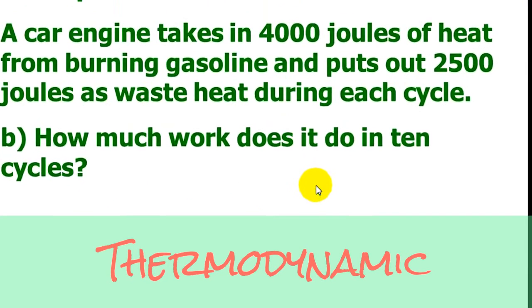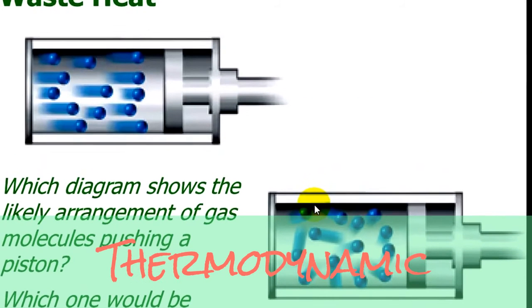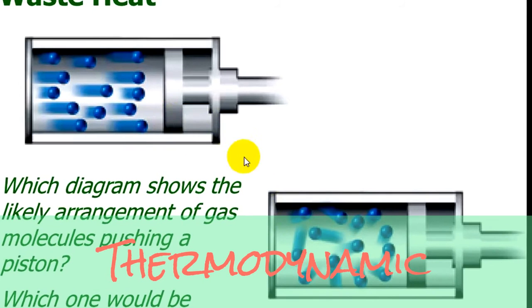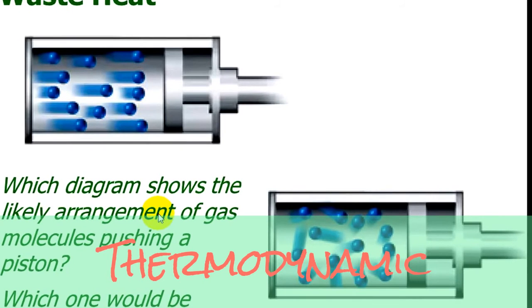Alright, so the next topic in this is waste heat. We're never going to be able to get all that energy from the incoming heat into work. You always have some waste heat, or even not just some but a lot of waste heat going out. So think about these two pistons. You have gas molecules inside. Which diagram shows the likely arrangement of gas molecules pushing a piston? And which one would be better and why?